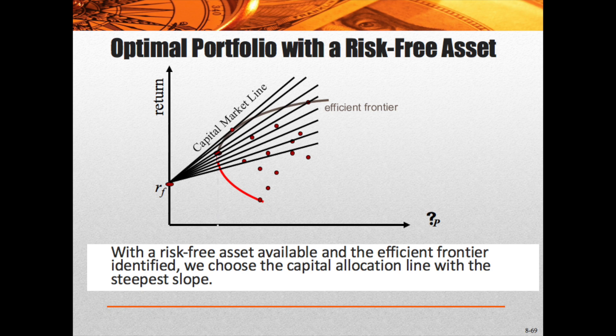There can be multiple capital market lines. When a risk-free asset is available and the efficient frontier is identified, we choose the capital allocation line with the steepest slope — in other words, the capital allocation line that is tangent to the most efficient frontier.